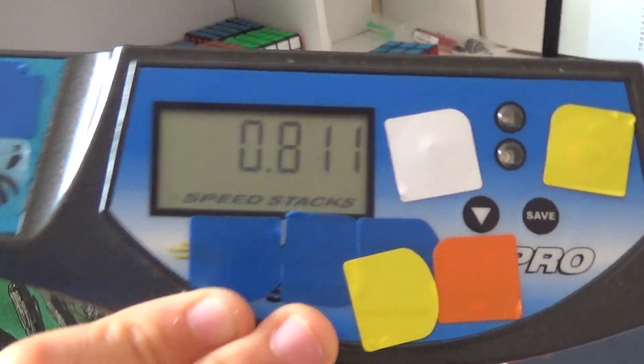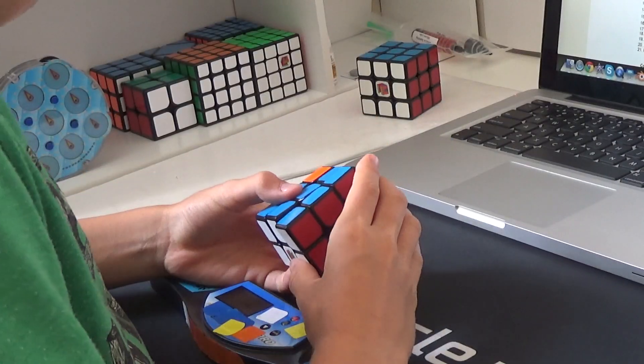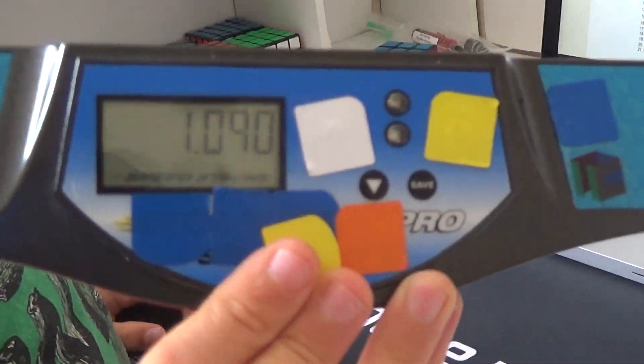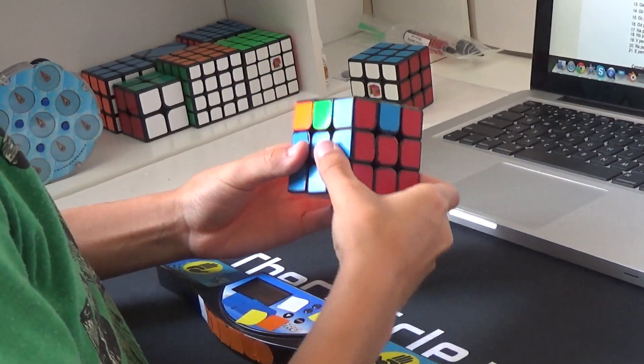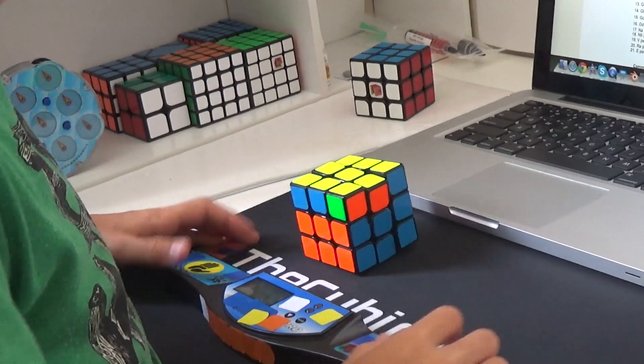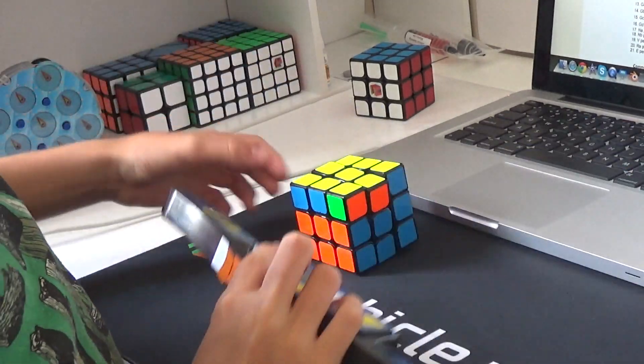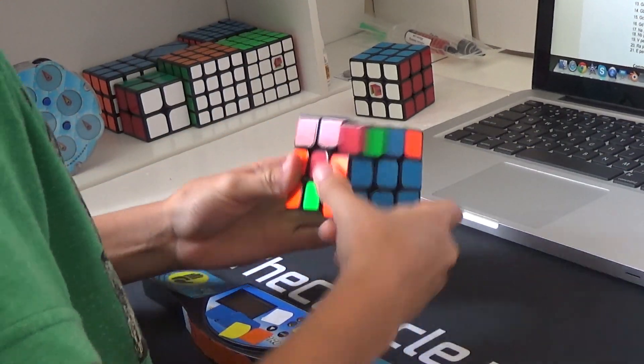0.81 U perm. 1.09 U perm, oh my god this scramble has such an easy yellow perm. 1.05 H perm, oh my god.